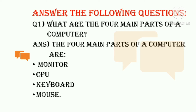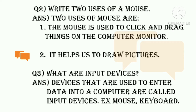Now we have to answer the following questions. Question one: what are the four main parts of a computer? The answer is: the four main parts of a computer are monitor, CPU, keyboard, and mouse.